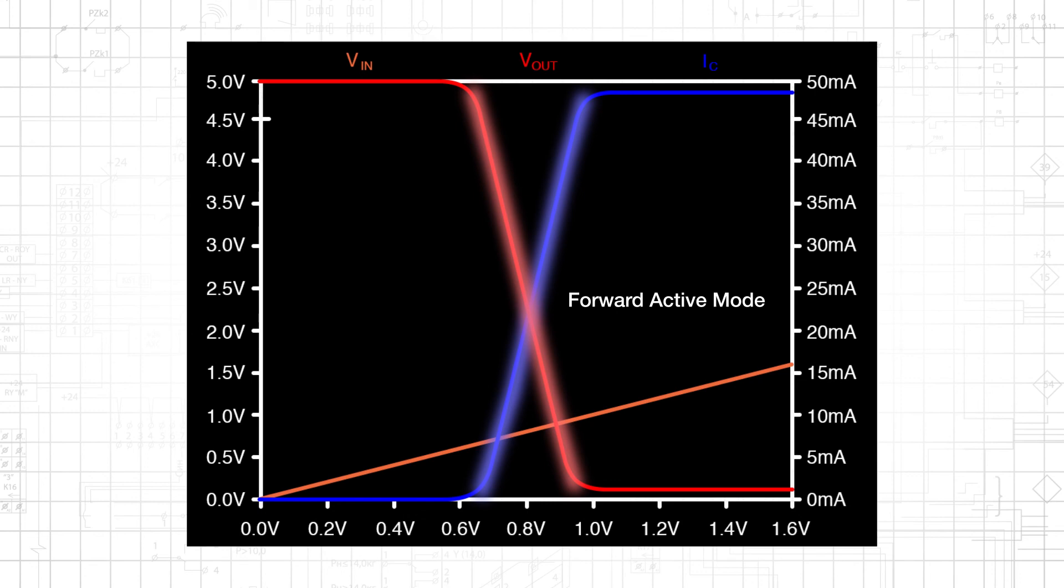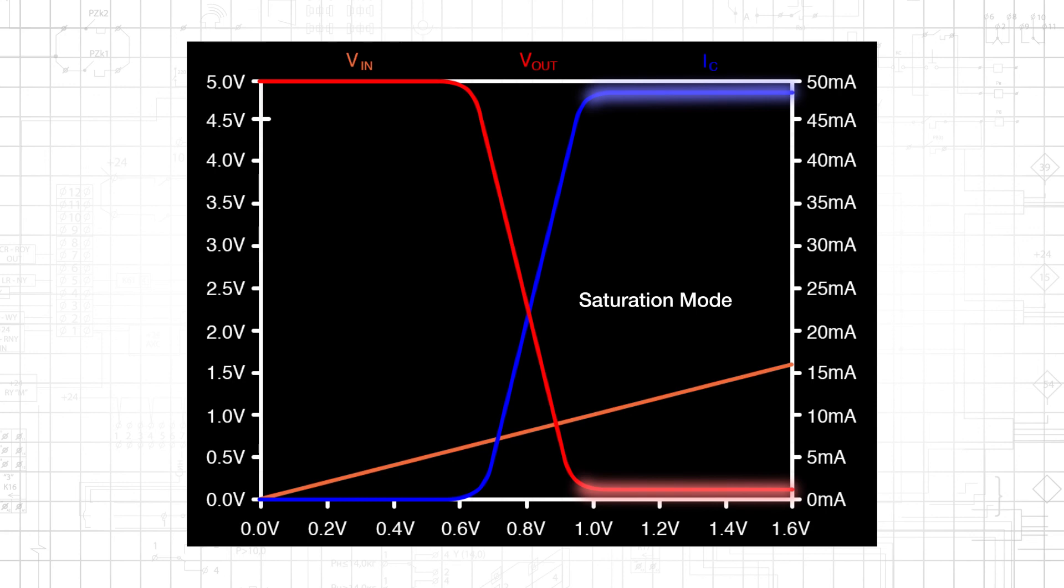The BJT exits forward active mode and collector current levels off when the BC voltage is 0.5 volts, which corresponds to a collector voltage of 0.2 volts.